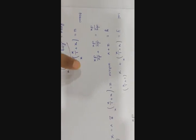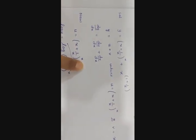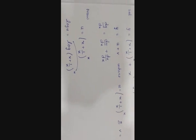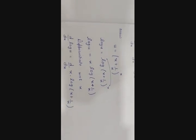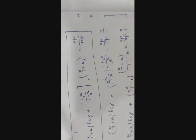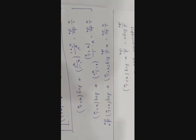Whenever we have a function where both the base and the power are functions of x, we apply logarithmic differentiation. So taking log both sides: log u = log(x + 1/x)^x. Using the log property, this x comes in multiplication, so log u = x · log(x + 1/x). Differentiating with respect to x, the left side becomes (1/u)(du/dx).